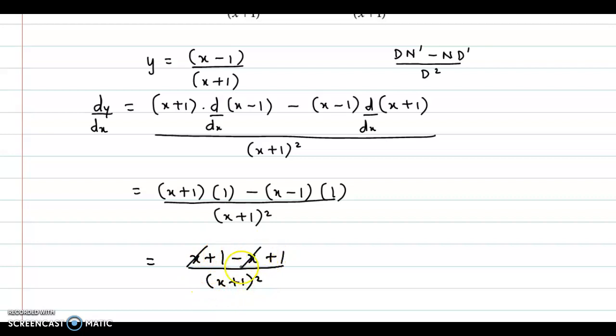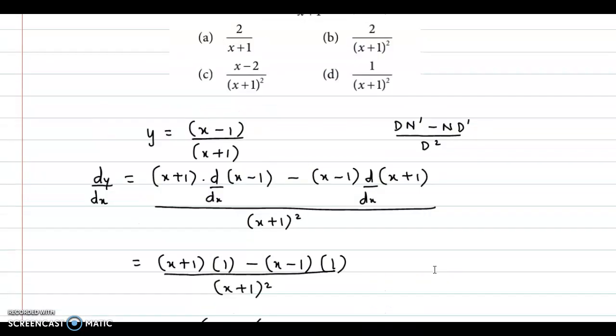Now x cancels with minus x, so the final answer is 2 upon x plus 1 the whole square. Let's check the option. So option b is the correct answer, 2 upon x plus 1 the whole square.